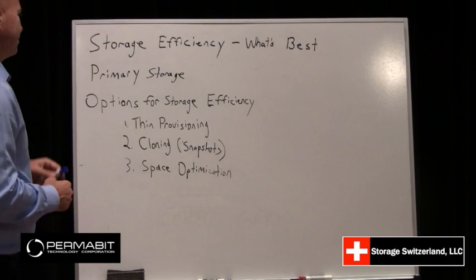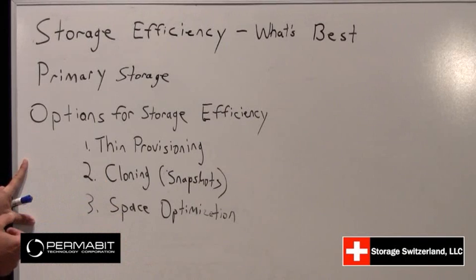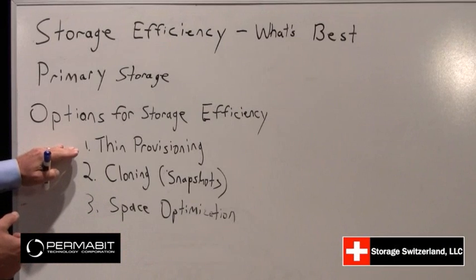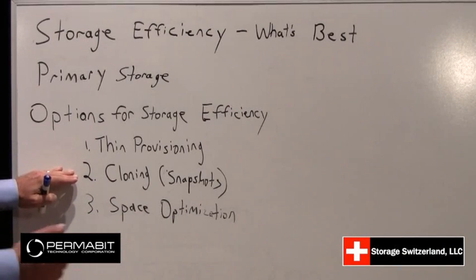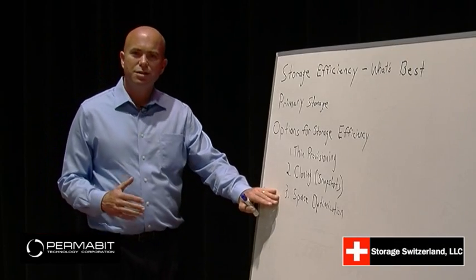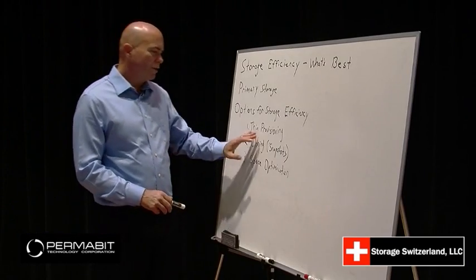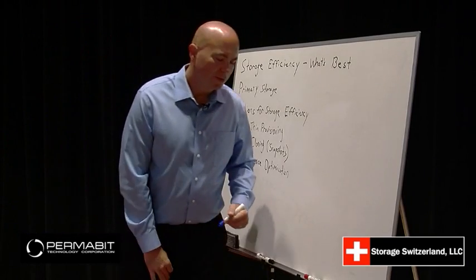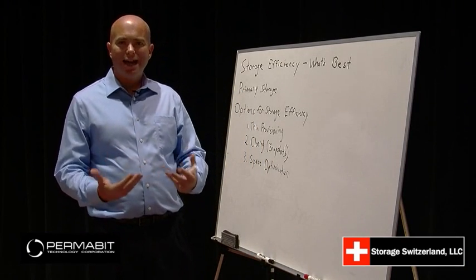So let's jump in. The first thing we want to do is look at the different options available to us in the storage efficiency equation. Most companies today will offer a feature called thin provisioning. Some will offer cloning based on snapshots. And we're seeing more and more companies start to really focus on providing space optimization. Let's look at how each one of these technologies work and which one might be the best for your environment. First, let's talk about thin provisioning. Thin provisioning basically dynamically allocates storage space as it's needed.